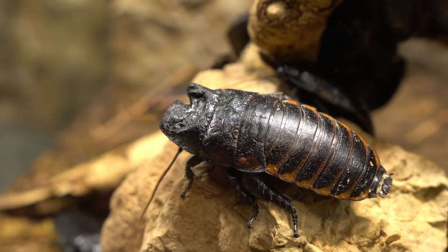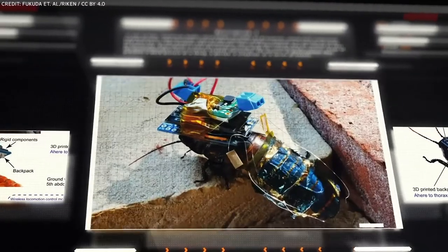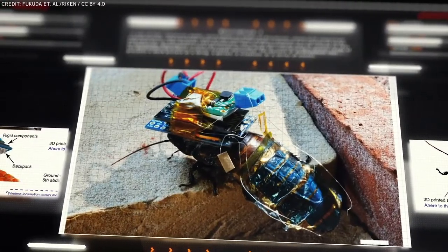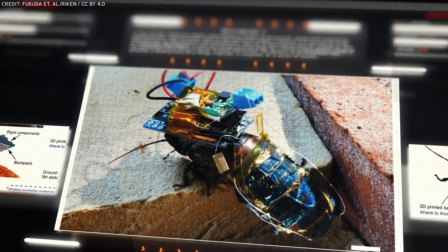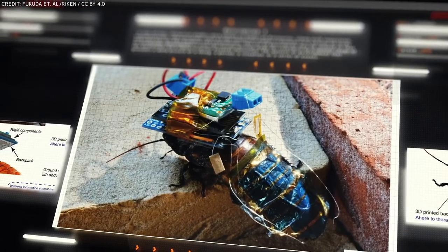Let's start with what exactly a cyborg cockroach is. Cyborg cockroaches are real cockroaches that have had a computer chip and electrodes implanted into their brains. This allows them to be wirelessly controlled from a distance.